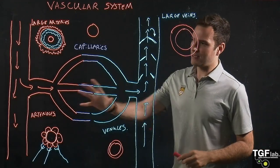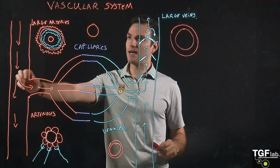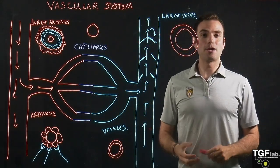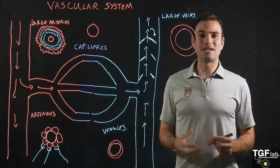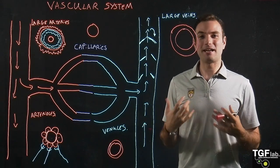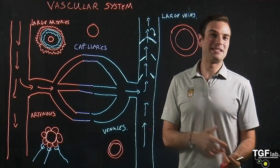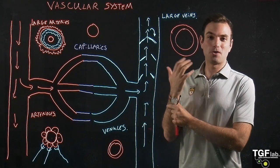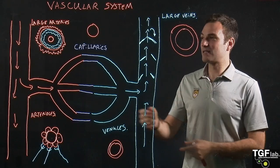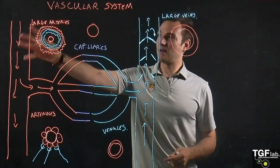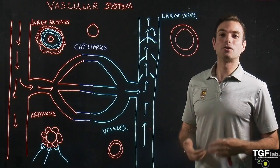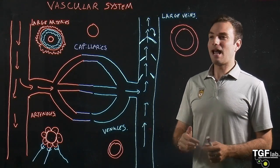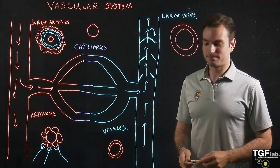One thing worth noting: if you ever want to differentiate in your body whether something is a vein or an artery, you check for a pulse. If there is a pulse, it is an artery — you can feel the contraction of the ventricle. If there is no pulse, it is a vein.